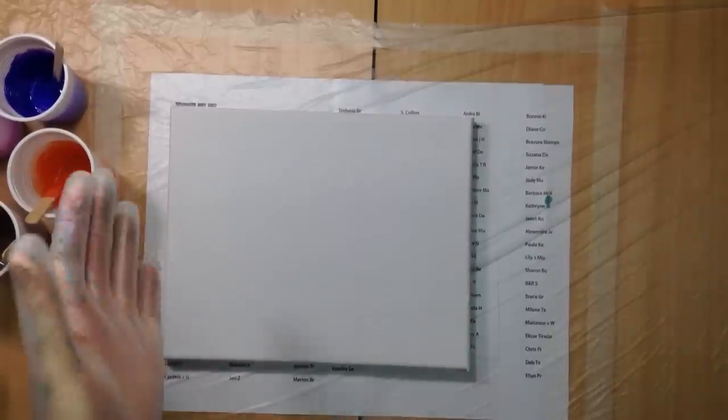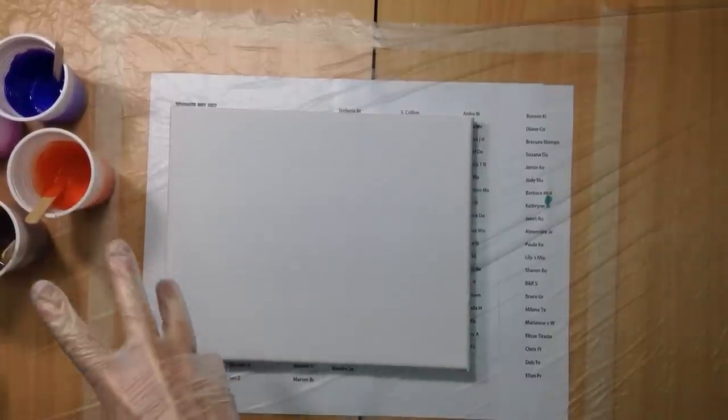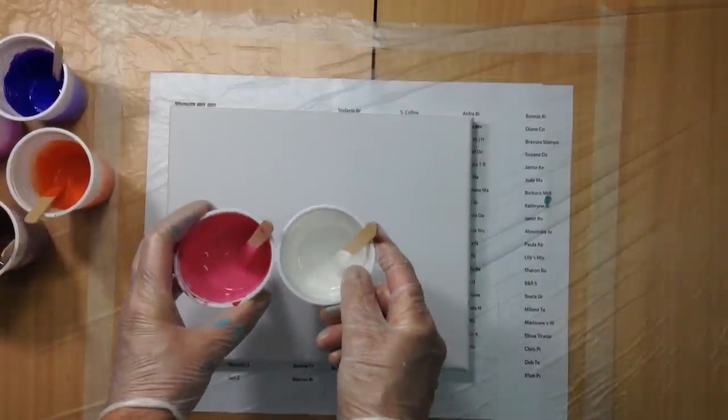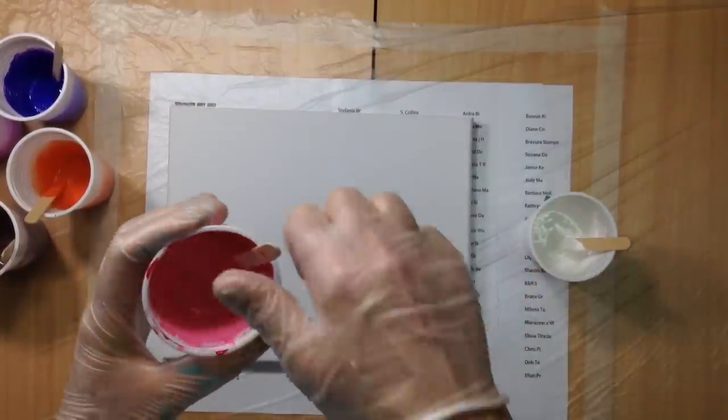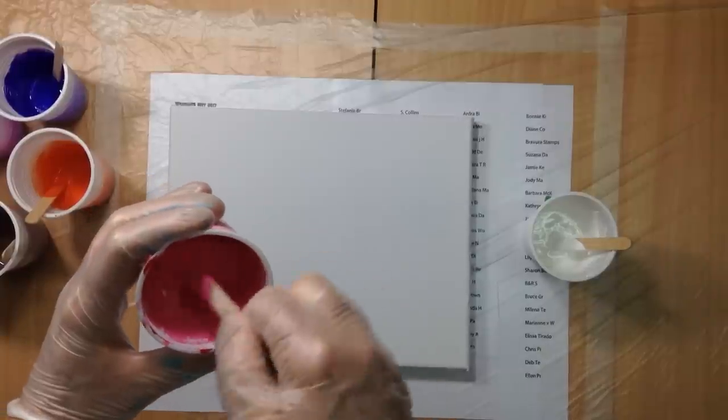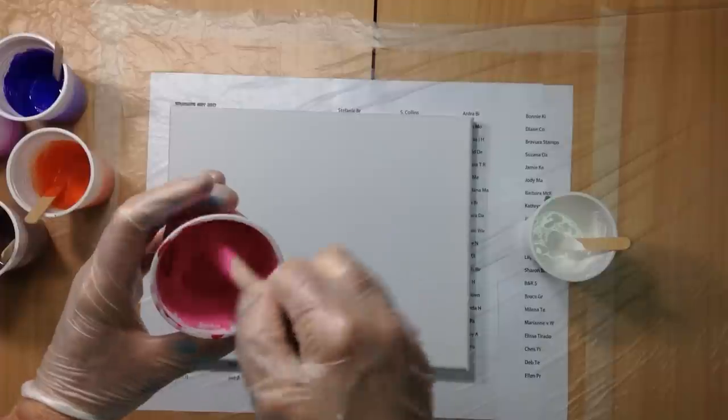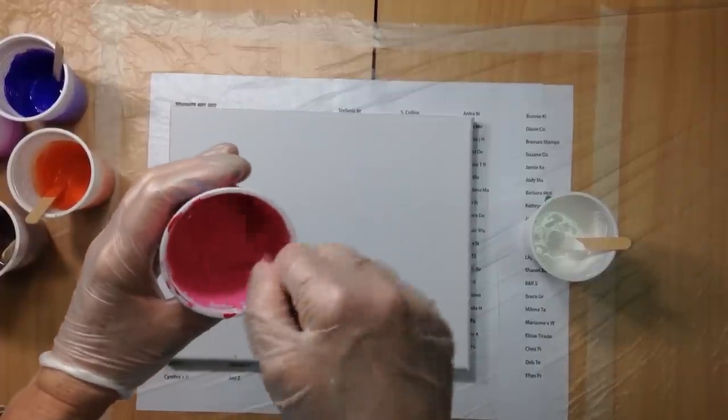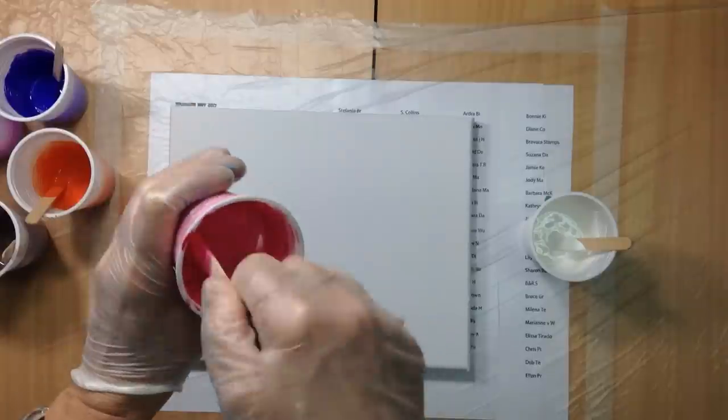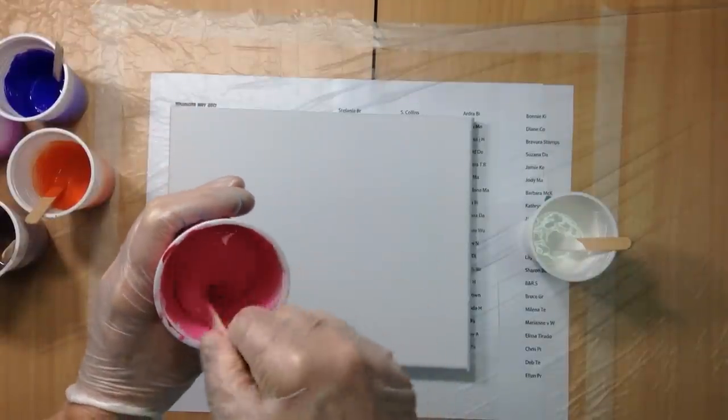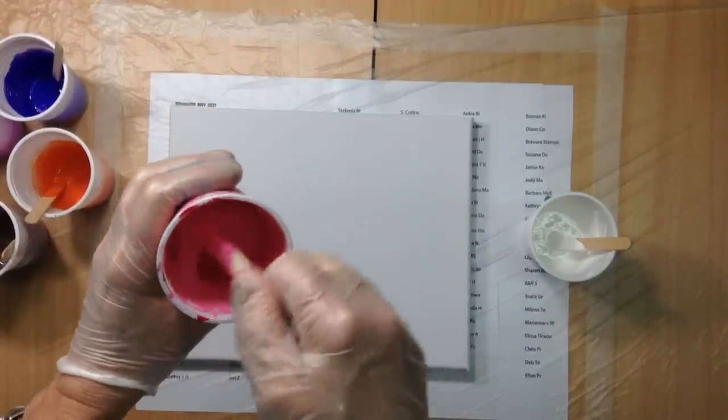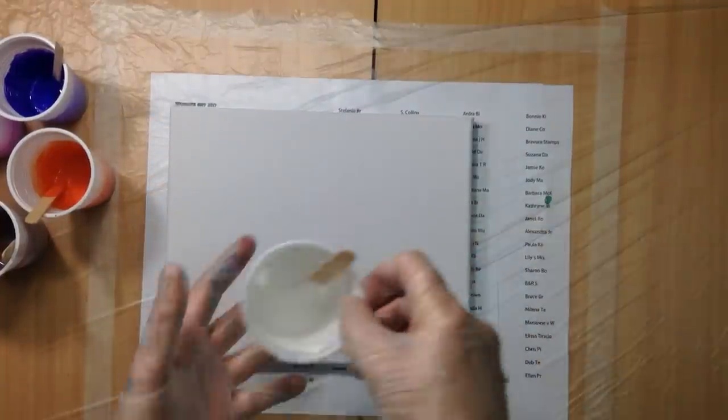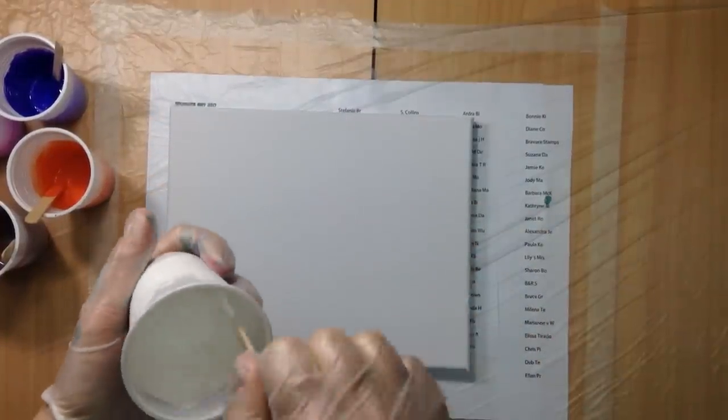So what I did is I mixed up some colors. These are just normal Windsor Newton colors with about 10% pouring medium. And then I added about 20% to 30% of PVA. I know that most people can get that PVA so cheap. So that's what I did.